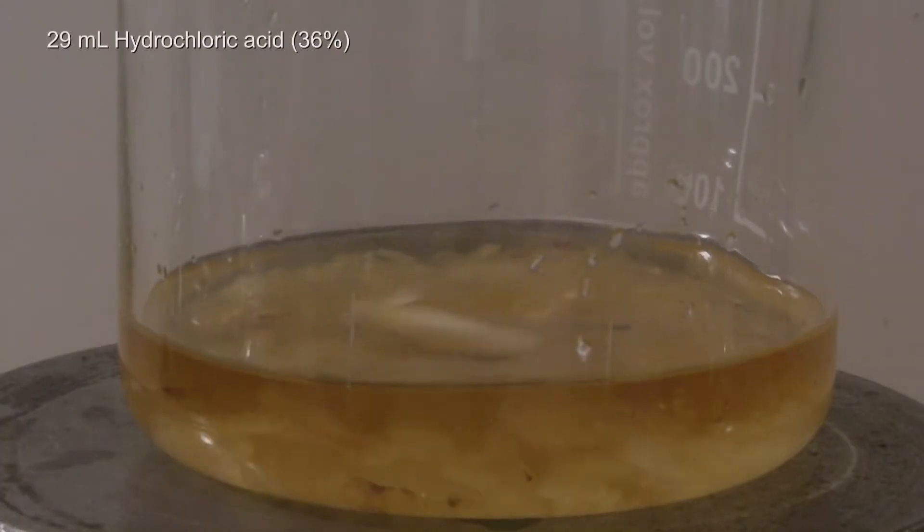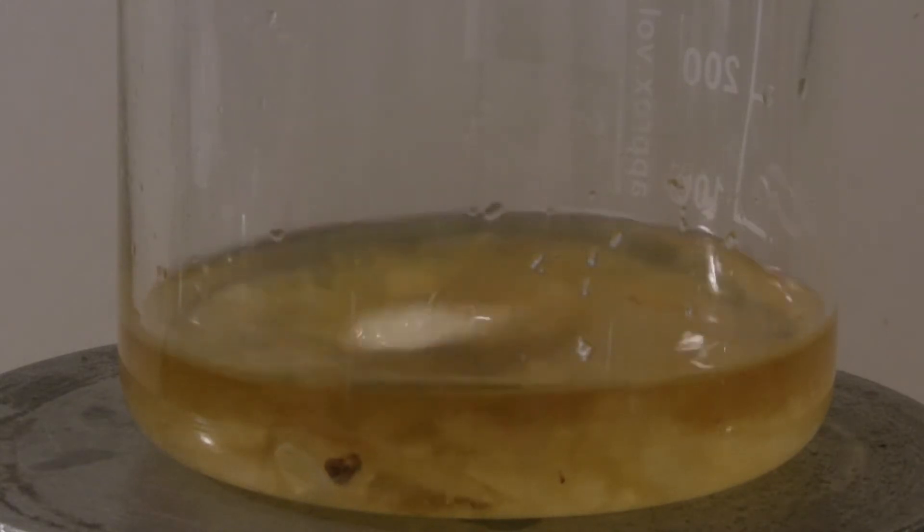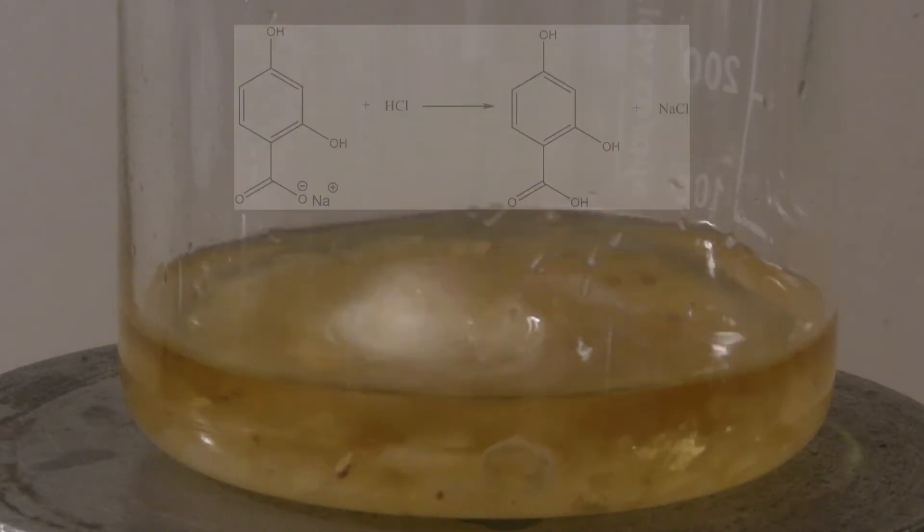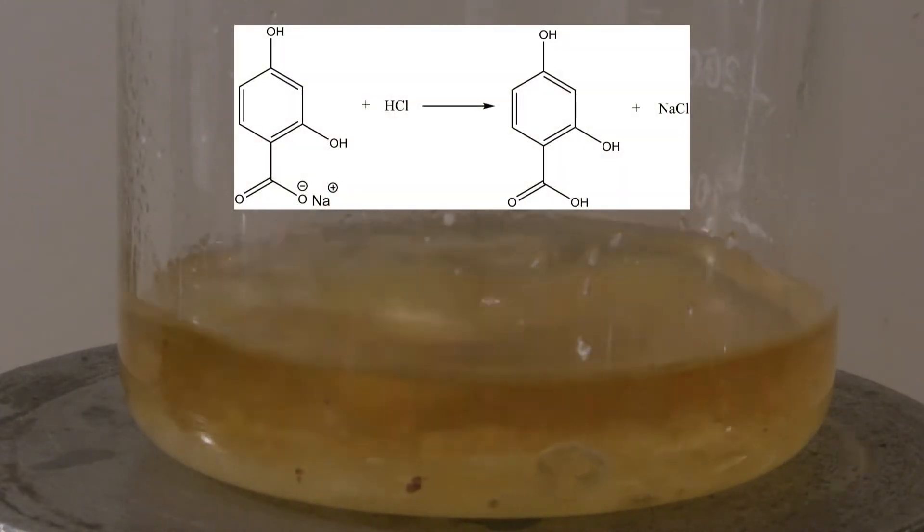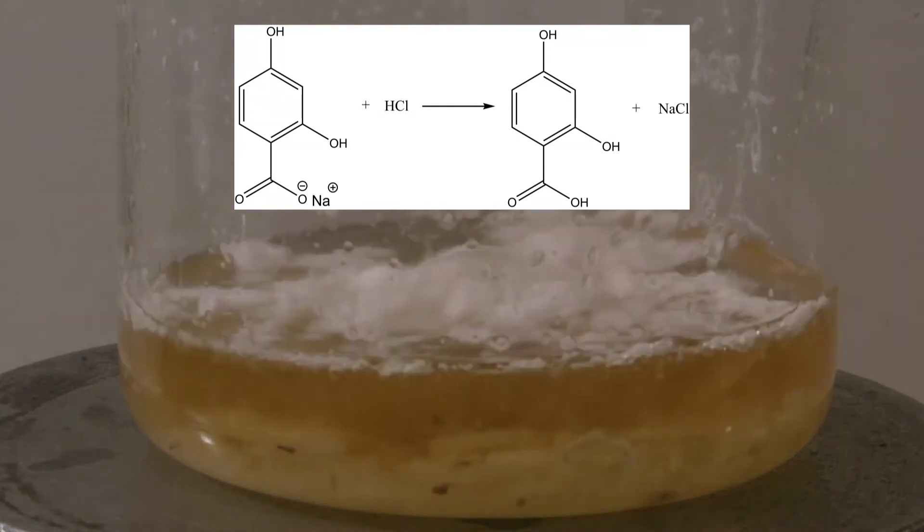Next, 29 ml of concentrated hydrochloric acid were added while stirring. This causes the resorcilic acid to be protonated and the free acid and sodium chloride are formed.